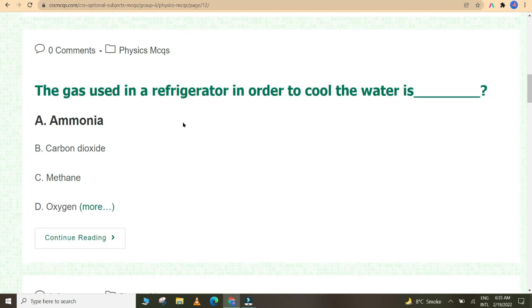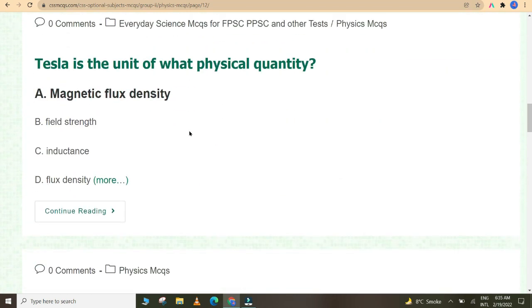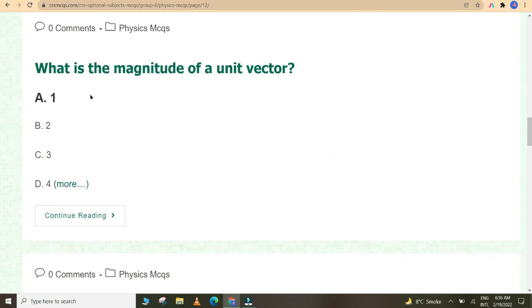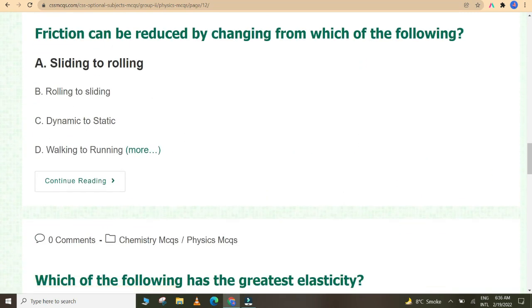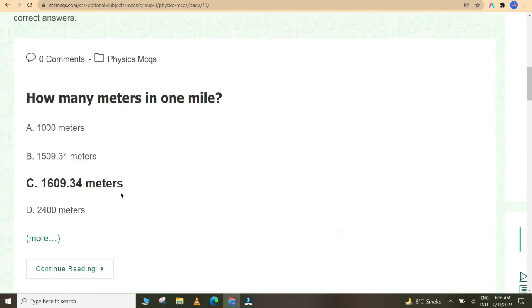The gas used in refrigerator in order to cool the water is ammonia. The dimension of surface tension is MT to the power minus 2. Tesla is the unit of magnetic flux density. What is the magnitude of a unit vector? One. Friction can be reduced by changing from sliding to rolling. Which of the following has the greatest elasticity? Steel. How many meters in one mile? 1609.34 meters. How many moons Jupiter has? 79 moons. Group of stars is called constellation.